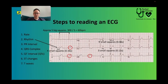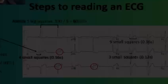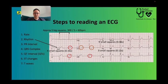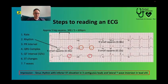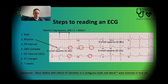Then we're going to look at ST changes. I go in for the inferior leads first: lead two, lead three, lead AVF. Let's look at T wave inversion next. There are no T wave inversions in the inferior leads, but there is one in lead AVL. So then we can come up with our impression: it's sinus rhythm because it's coming from the SA node at a normal heart rate of 60. There's inferior ST elevation in three contiguous leads and lateral T wave inversion in lead AVL. And that's how you document that on your paperwork.